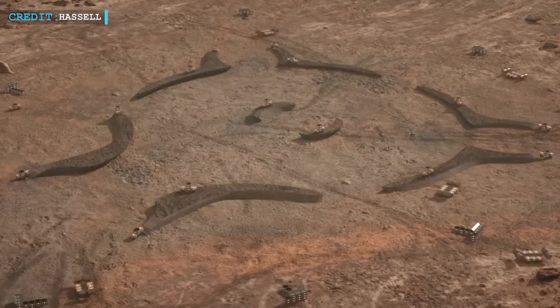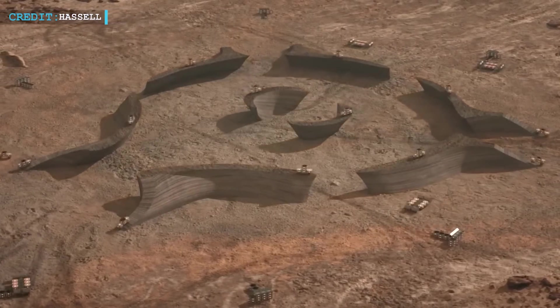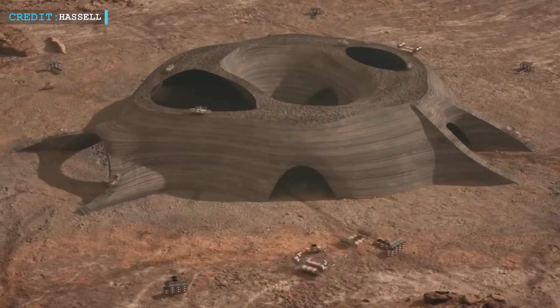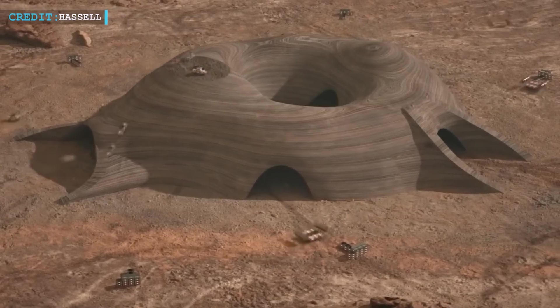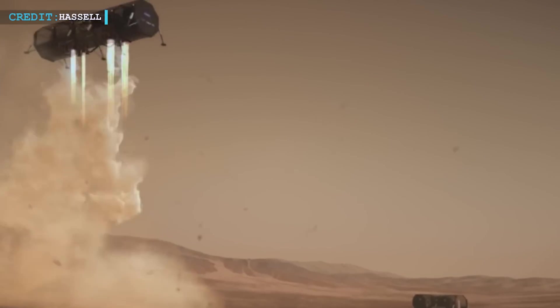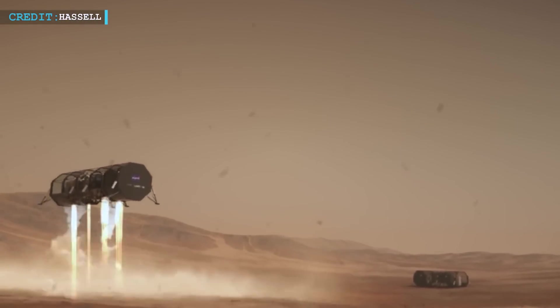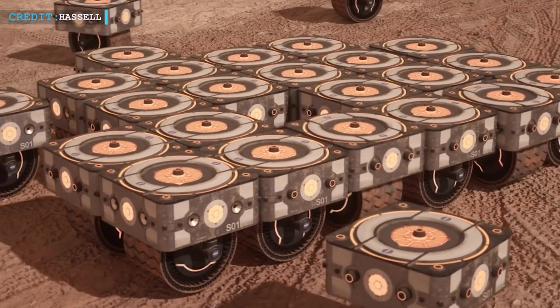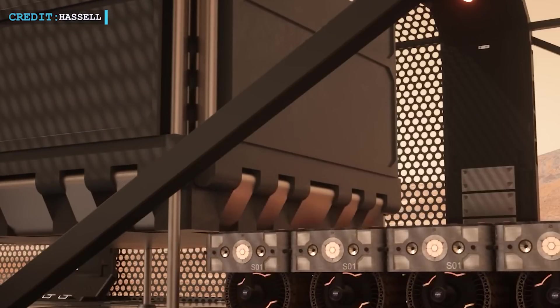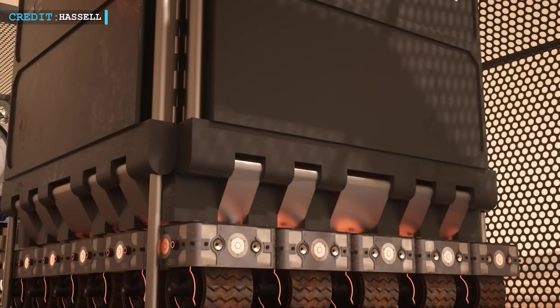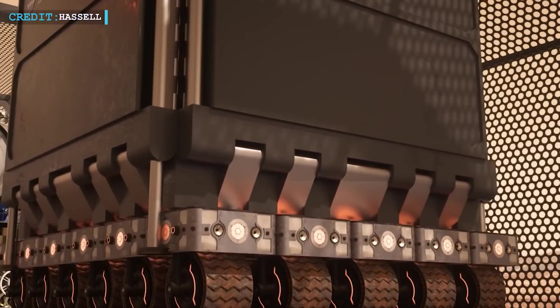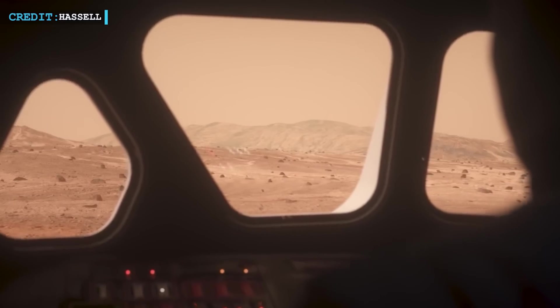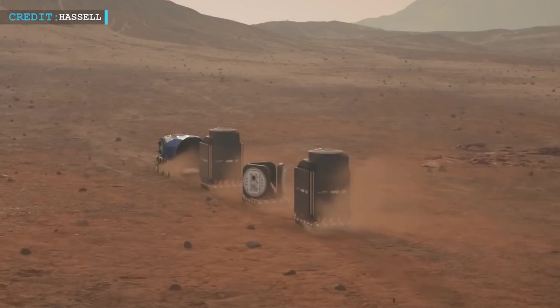As the operational Mars base nears completion, the exterior regolith shell acts as its protective covering. The colonizers will find shelter within these walls, shielded from the harsh conditions of the Martian environment. But they won't be alone in their new home. Alongside the astronauts, dozens of robots and automated vehicles will call this Martian colony their own. These mechanical companions will play vital roles in supporting the colonizers and assisting with maintenance, exploration, and scientific research. It is a partnership between humans and machines, working together to unlock the mysteries of our neighboring planet.